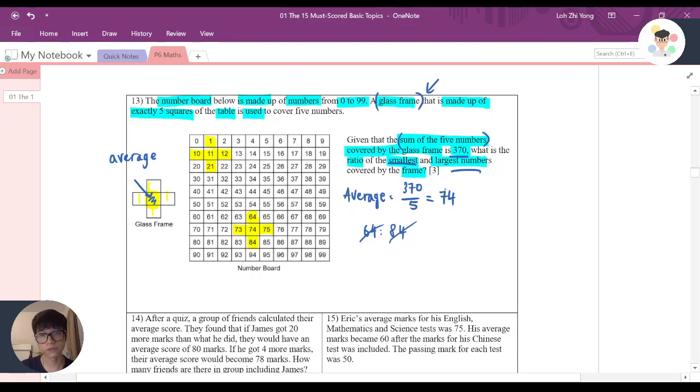And if you put on the calculator, 64 divided by 84, and you will leave it in the fraction. For sure, you know that the answer is actually 16:21. And you are done with this question.